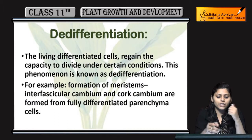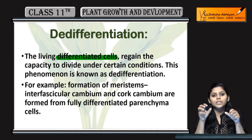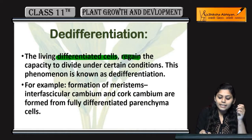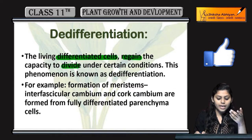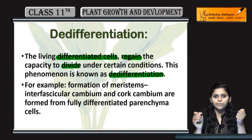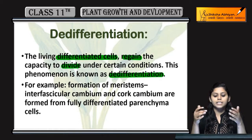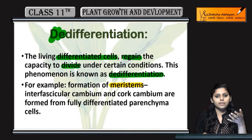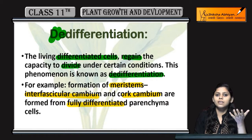Next is de-differentiation. Living differentiated cells — cells that have already been assigned a particular function — regain the capacity to divide under certain conditions. This phenomenon is called de-differentiation. For example, the formation of interfascicular cambium and cork cambium, which form from fully differentiated parenchyma cells, is an example of de-differentiation.